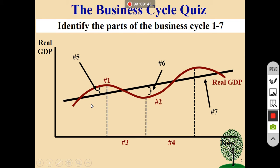Number one is the peak, two is the trough. When it's the downward slope, that's three — a recession. When it's an upward slope, four is expansion. The distance between the full employment line and the curve — number five — is a measure of inflation. The distance between the full employment line and the trough — number six — is unemployment. And seven, the black line, is full employment.